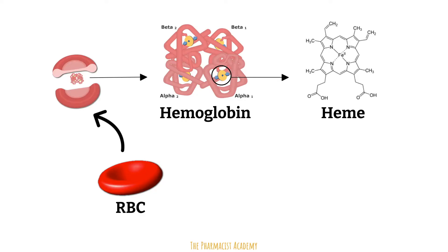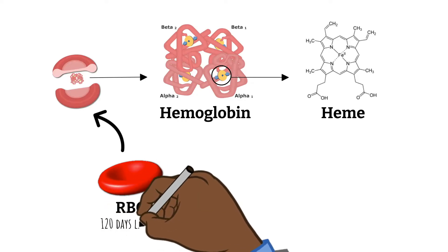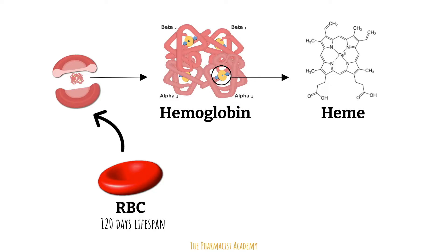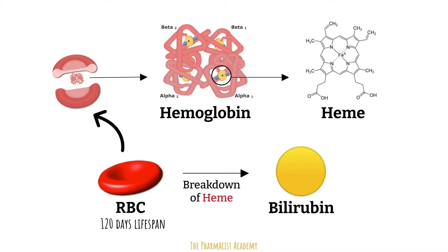In normal circumstances, the red blood cells are broken down after 120 days. Degradation begins inside the macrophages of the spleen, which removes old and damaged red blood cells from the circulation. During this breakdown of the red blood cells, there's also a breakdown of hemoglobin and heme. The breakdown of heme leads to biliverdin, which is then reduced to bilirubin.